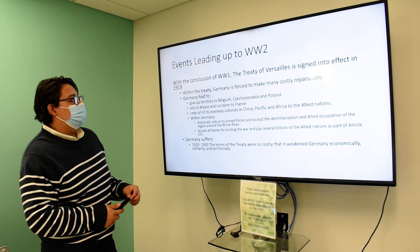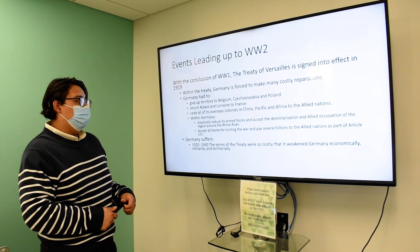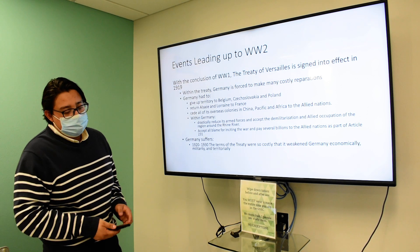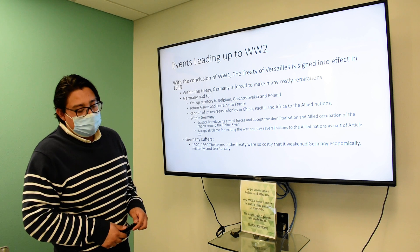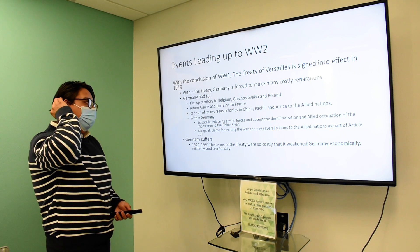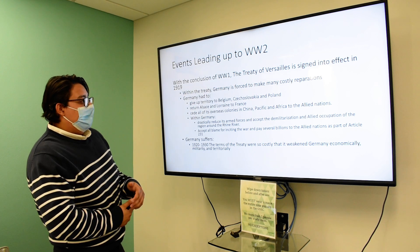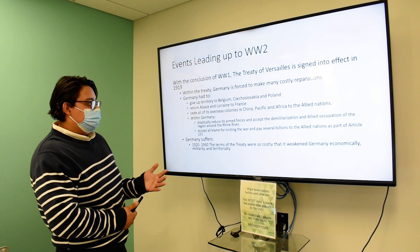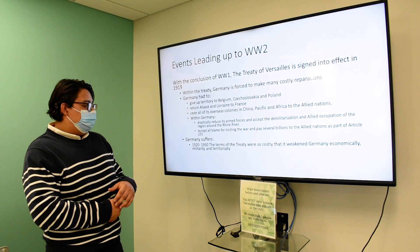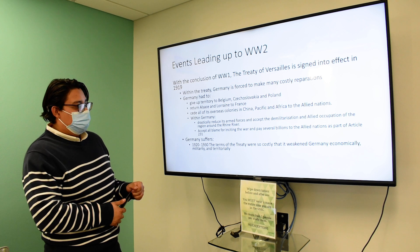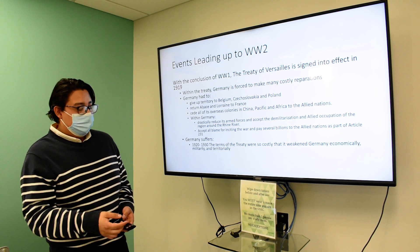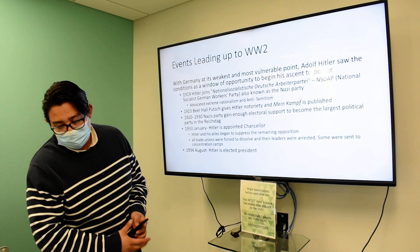We're going to start with the events leading up to World War II. With the conclusion of World War I, the Treaty of Versailles was signed into effect. It's very long and extensive, and it really favors the Allies. A lot of countries, such as Germany, are very unhappy with it. They have to give up a lot of territory, demilitarize themselves, and pay several billions. Germany during 1920 to 1930 suffered very badly economically, militarily, and territorially.